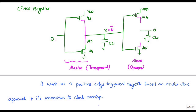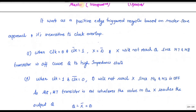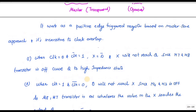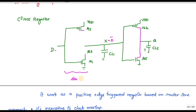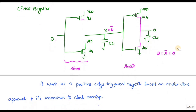During this time, X equals D-bar. For the next condition, when the clock is one and clock-bar is zero, the master side becomes open circuit and the slave side conducts. The X-bar value passes through the slave inverter, so D reaches Q. My D value will reach output Q.